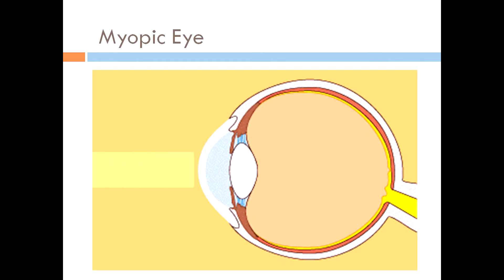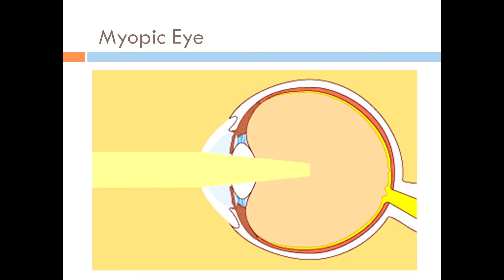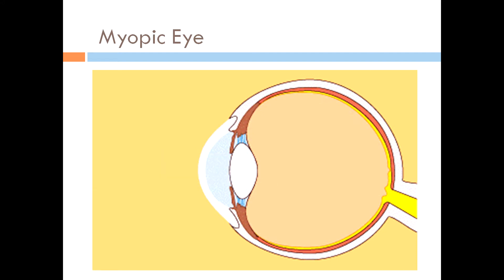But with the myopic eye, when light enters your eye, the ray of light is situated in front of the retina — not onto the retina itself, but just in front of it. As a result, close objects are seen clearly while distant objects appear blurred when you have a myopic eye.